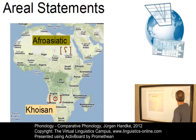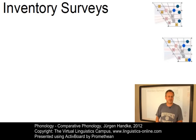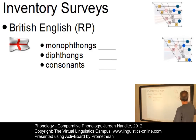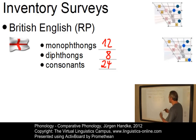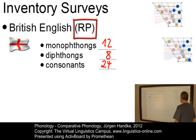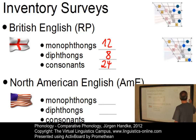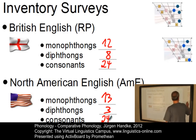Beyond areal statements, we can look at inventories across languages — that is, the number and distribution of segments in particular languages. In British English, specifically received pronunciation, we know that there are 12 monophthongs, 8 diphthongs and 24 consonants. If we compare that with American English — specifically the North American English type spoken around the Great Lakes — then we only have 13 monophthongs and 3 diphthongs, due to the high degree of rhoticity, and the same set of 24 consonants.